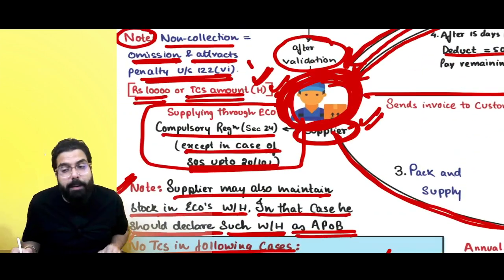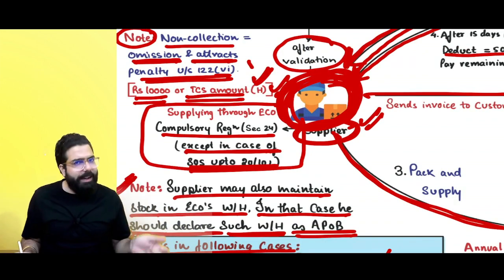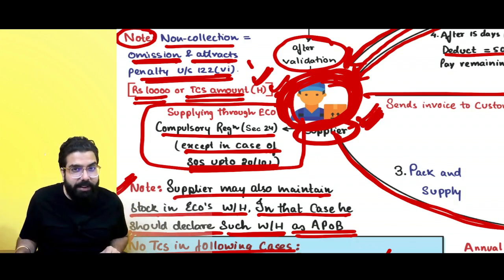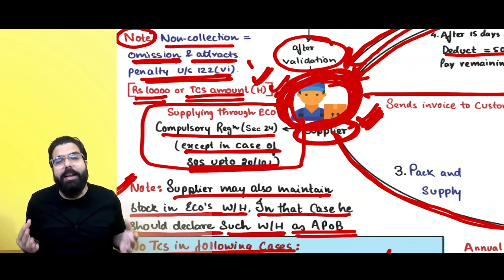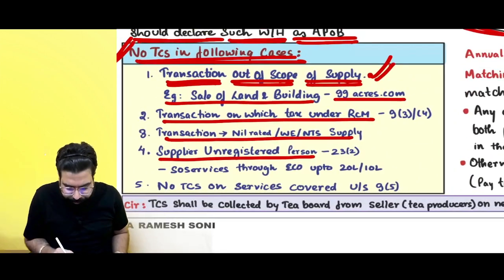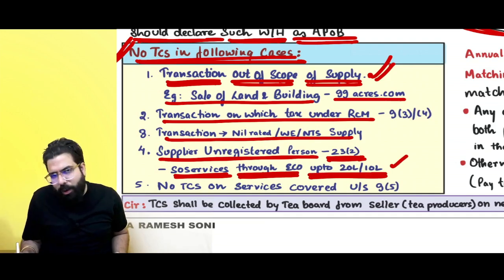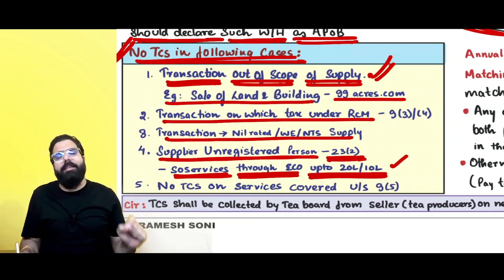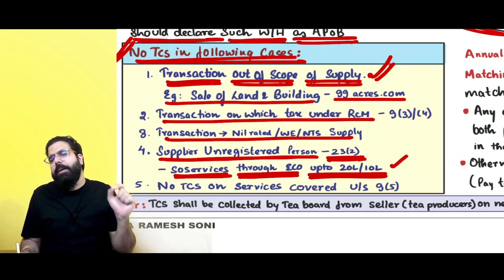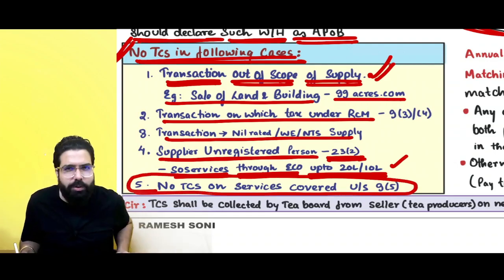Number four — supplier is an unregistered person. If the supplier is supplying services and the 20 lakh or 10 lakh exemption is applicable, the supplier would be exempt from registration. The government has told the e-commerce operator not to deduct TCS for such unregistered suppliers under Section 122(3). Supply of services through e-commerce up to 20 lakh or 10 lakh threshold — no TCS. Also, no TCS on services covered under Section 9(5) — housekeeping, accommodation, and transportation service.